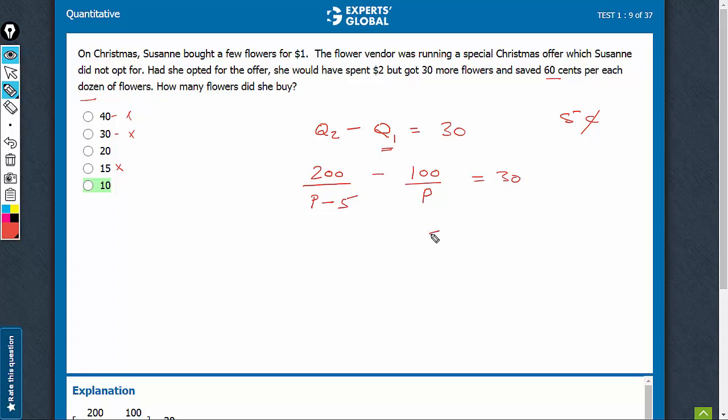100 upon 20 is 5. 200 upon 15 will not be an integer. So, 20 is also not possible.